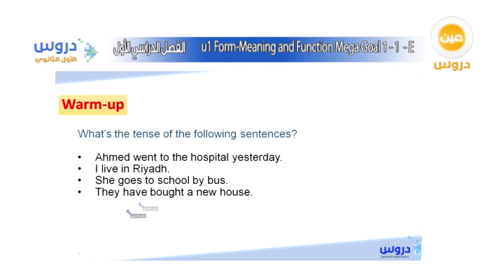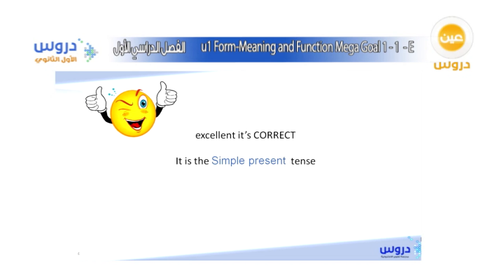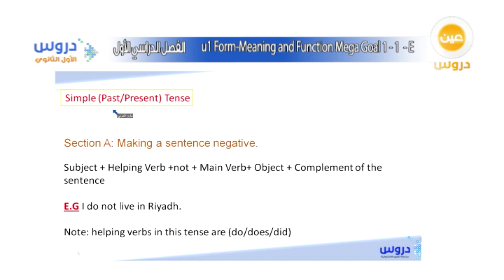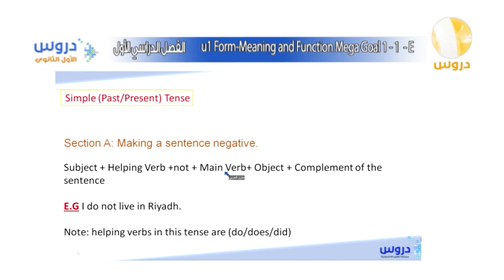Now we know the tenses of each sentence because the first thing we do to figure out the tense is to look for the verb. Moving on to the next slide: the first thing we'll learn is how to make a negative sentence with simple present. Here is the form: we start with the subject, then the helping verb — do, does, or did — then 'not,' then the main verb, then the object, and then the complement of the sentence.